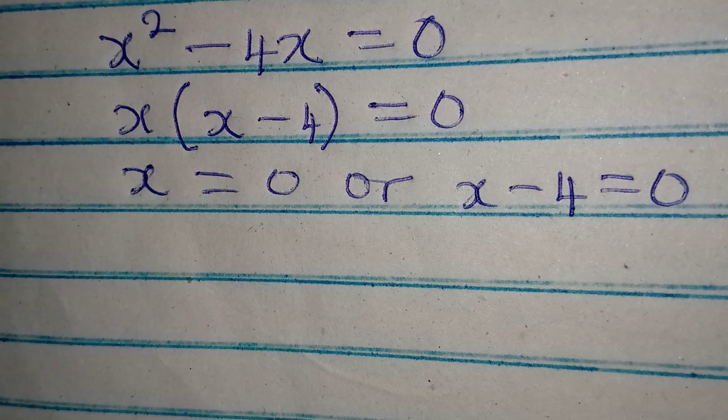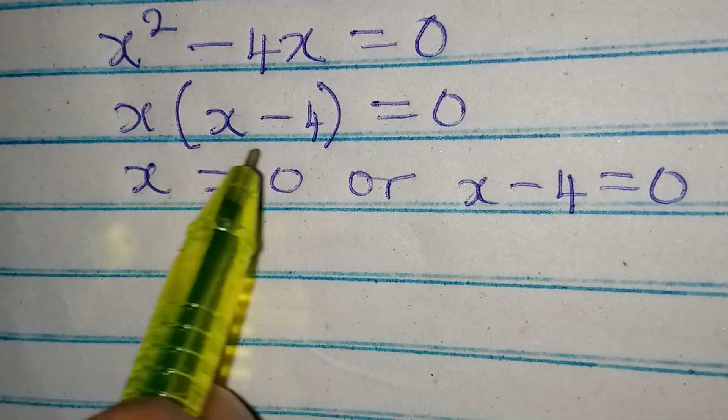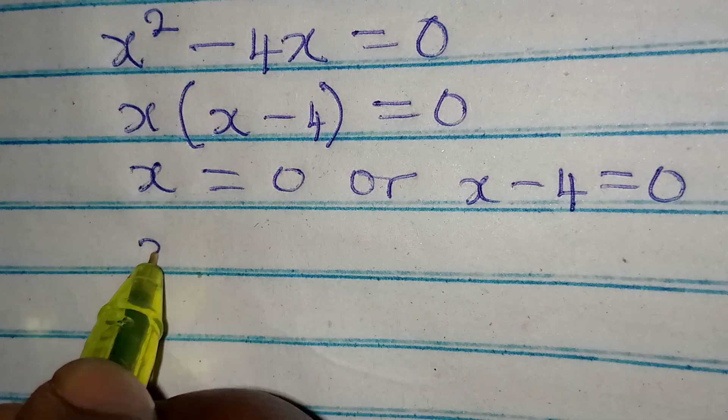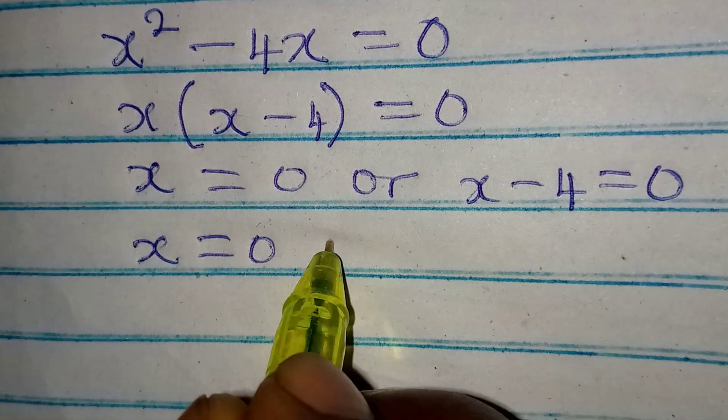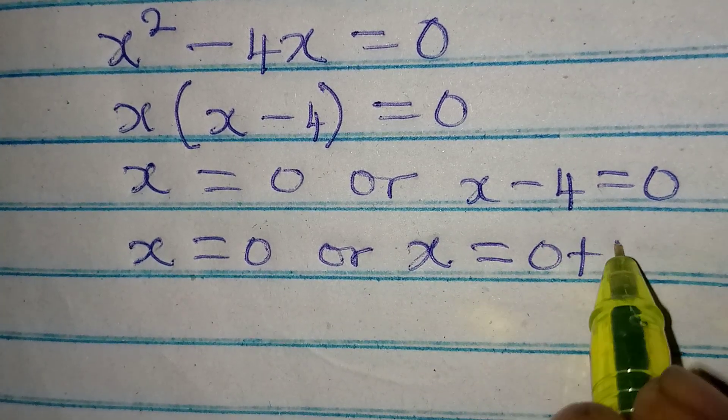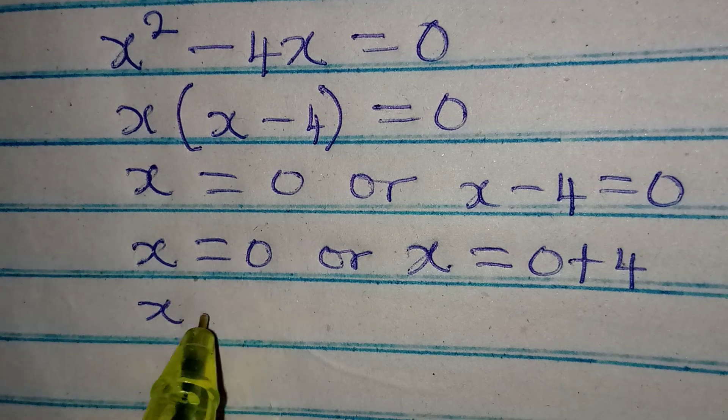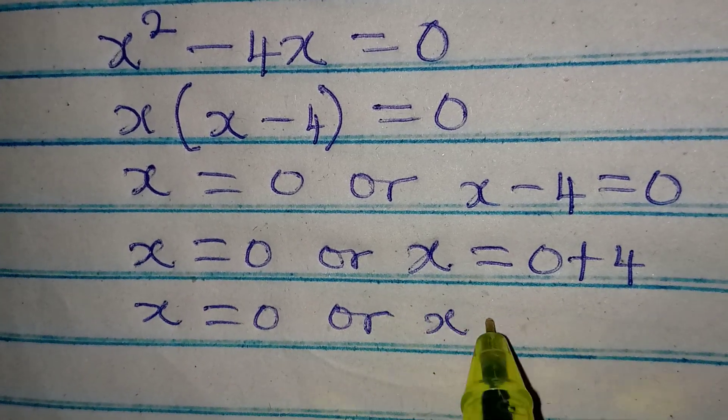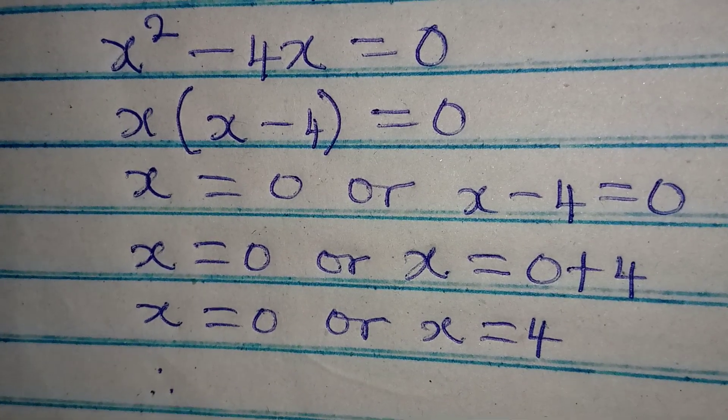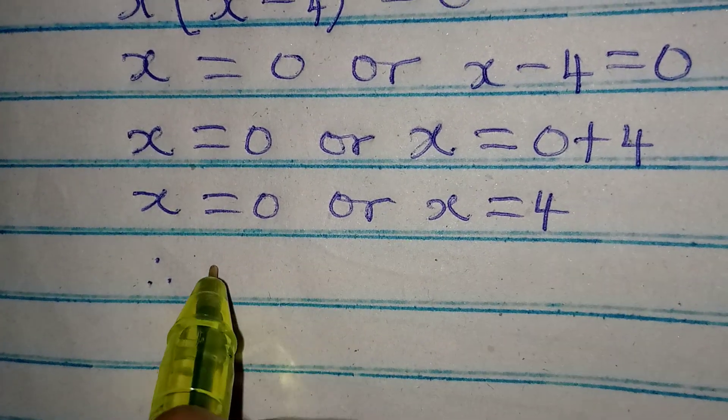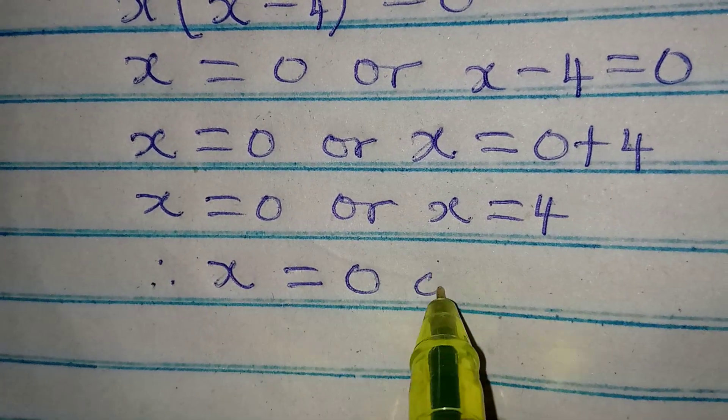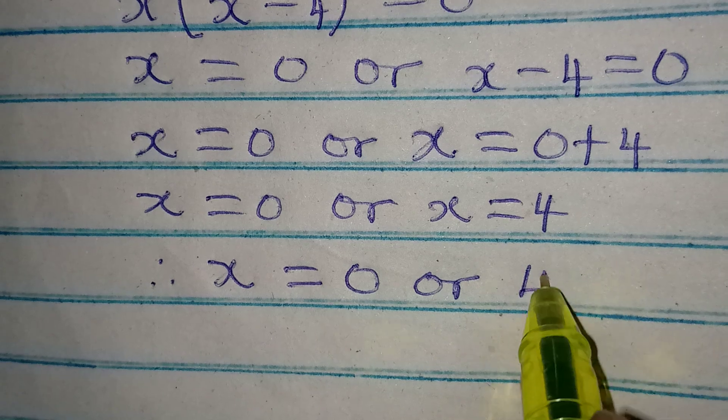It's either one of the terms is equal to 0, or both of them are equal to 0. Now x is equal to 0, or x is equal to 4. Therefore, the value of x are x equals 0 or x equals 4.